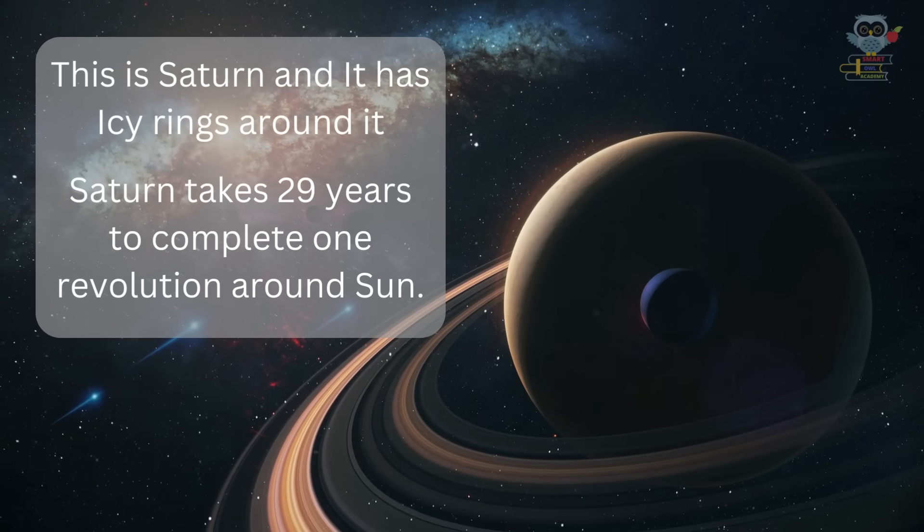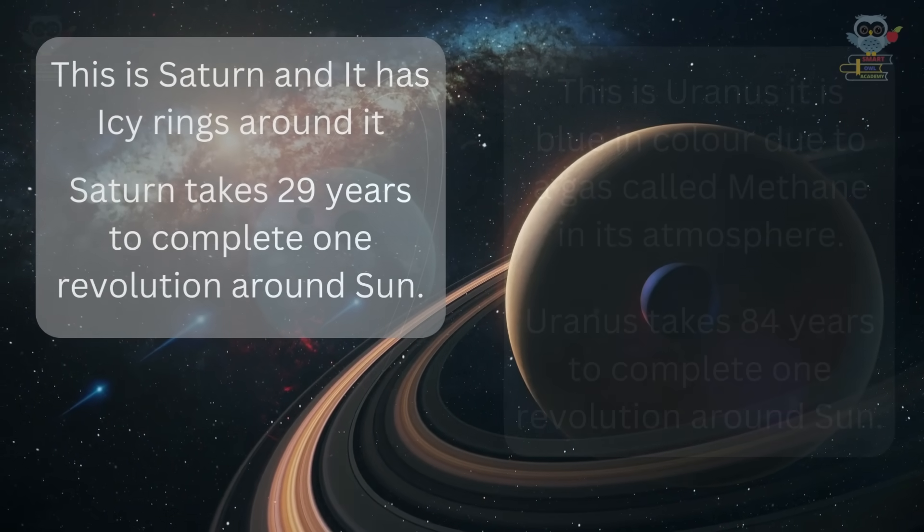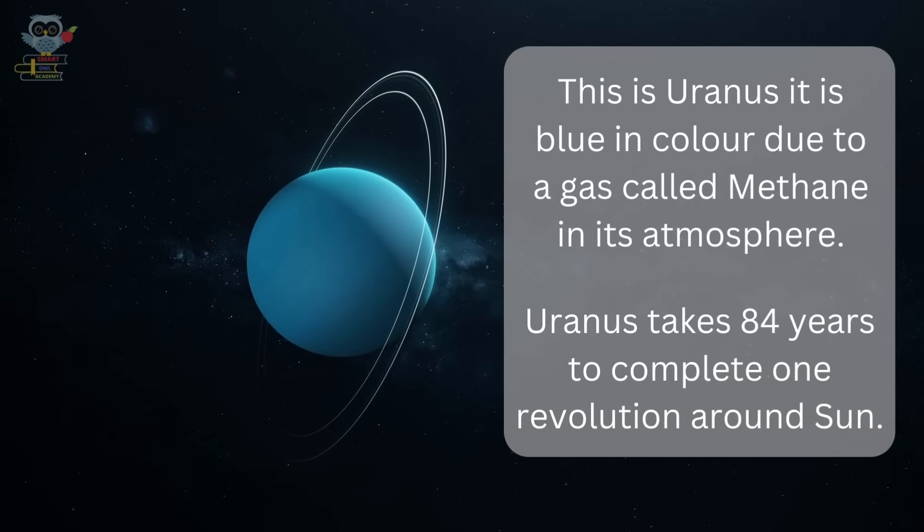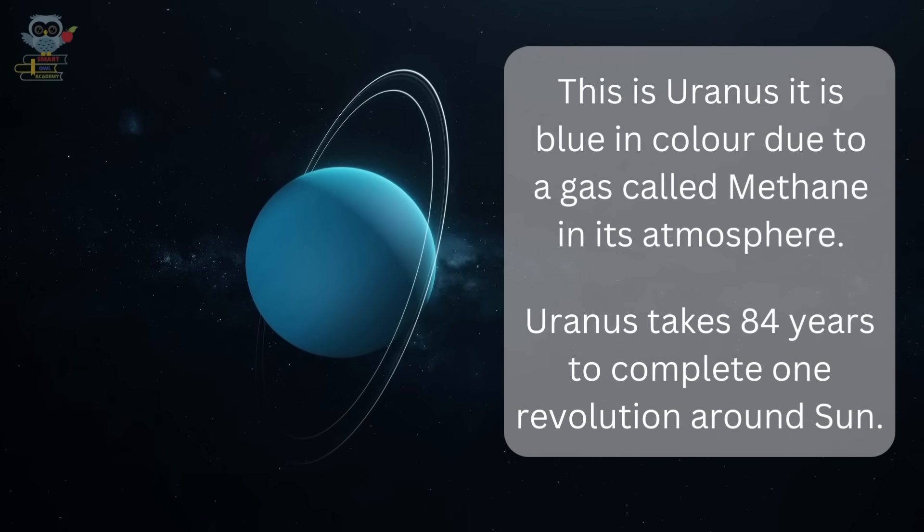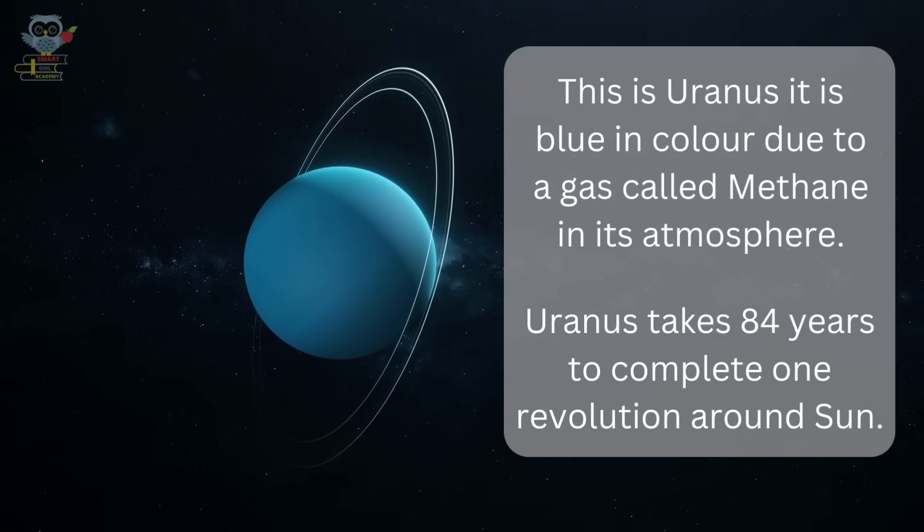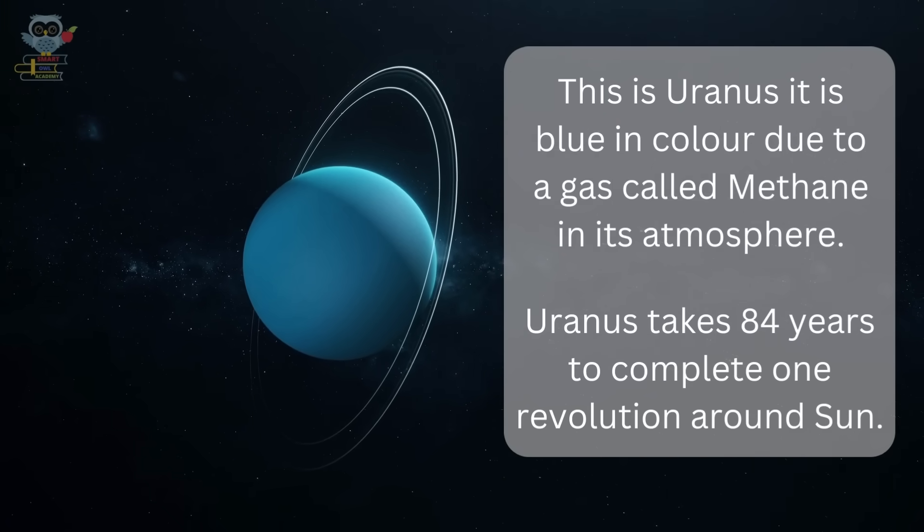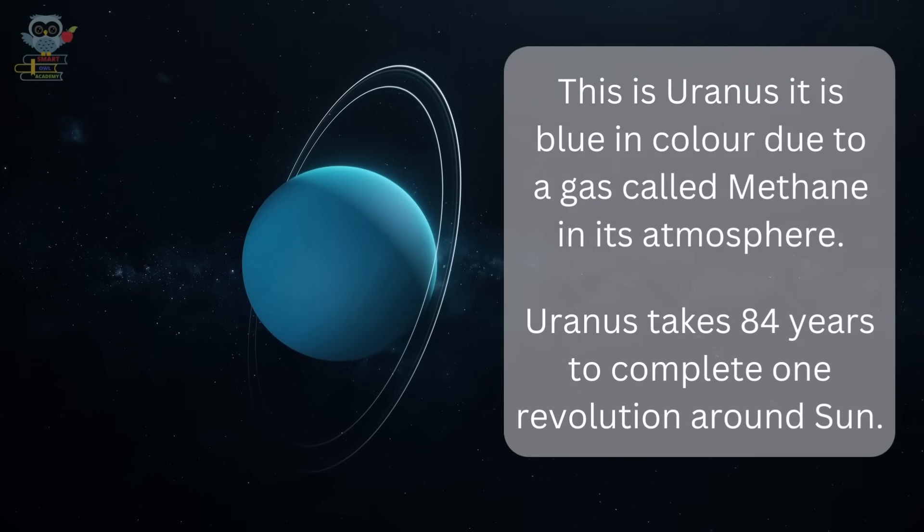This is Uranus. It is blue in color due to a gas called methane in its atmosphere. Uranus takes 84 years to complete one revolution around the Sun.